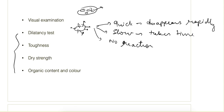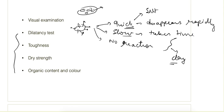If there is no reaction and the water does not go back, that is also noted. A quick reaction is an indication of silt. If the reaction is slow, or if there is no reaction at all — meaning the water has come out but is not going back or is taking a long time — then it is an indication of clay.